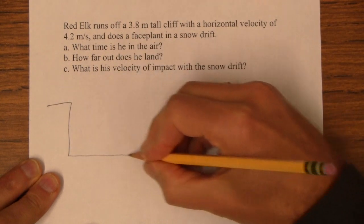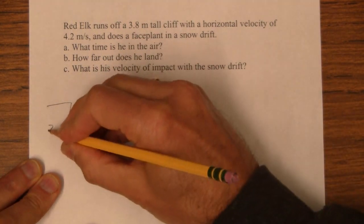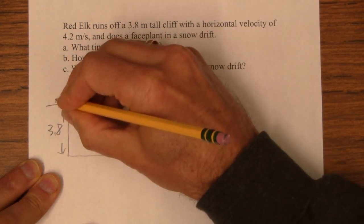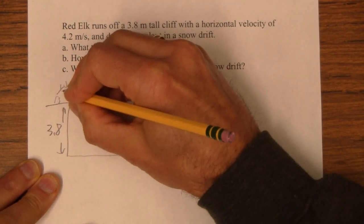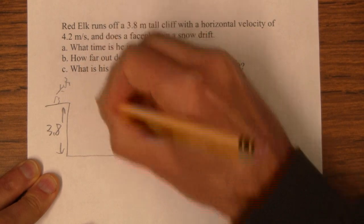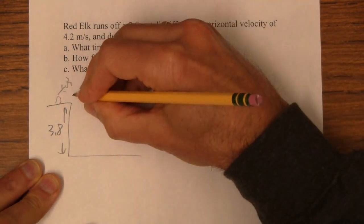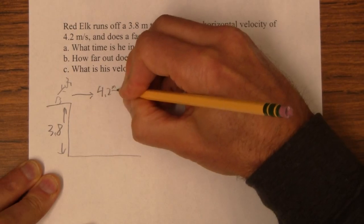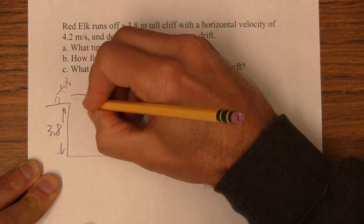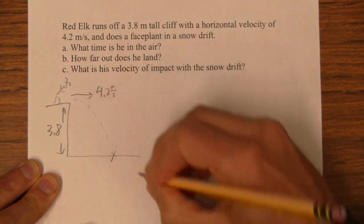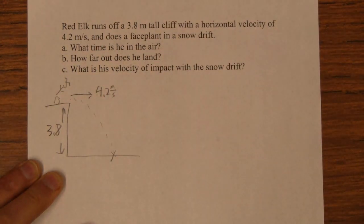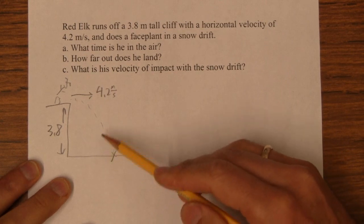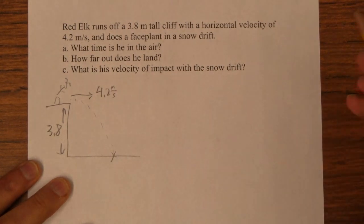It's always good to draw a picture. This cliff is 3.8 meters tall and Red Elk is going to run off this thing. He's moving 4.2 meters per second, and he's going to follow some trajectory here and land someplace here. And we want to know the time in the air, how far out, what this distance is, right? And then we're going to figure out his velocity of impact.